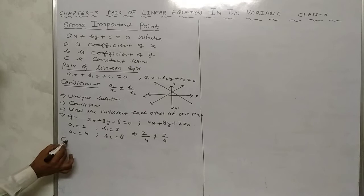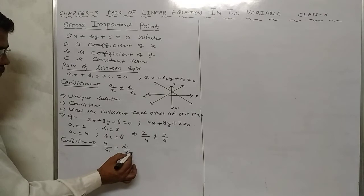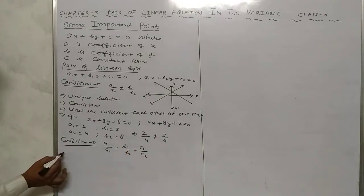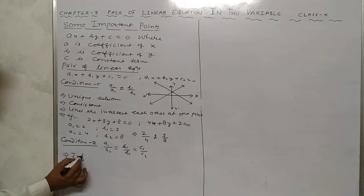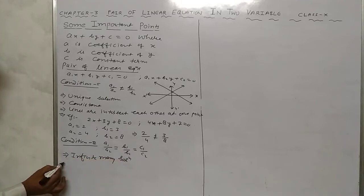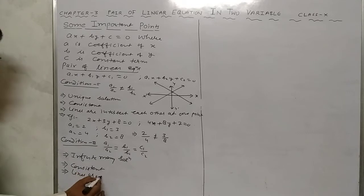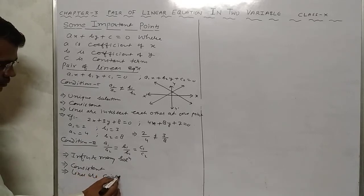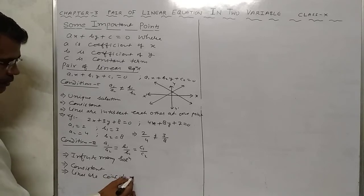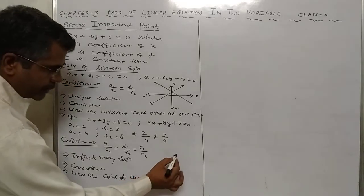Condition two: when a1 upon a2 equals b1 upon b2 equals c1 upon c2 — infinite many solutions, consistent. The lines coincide, meaning they overlay each other.